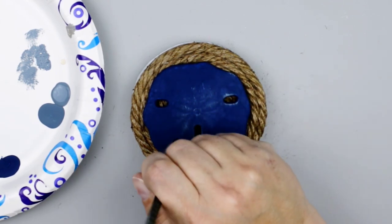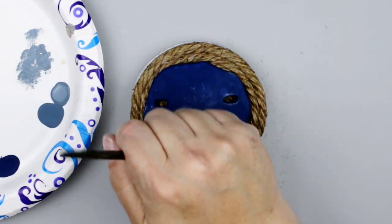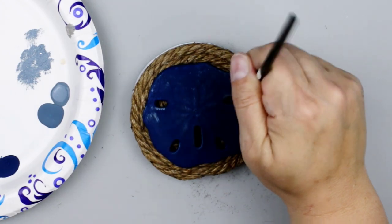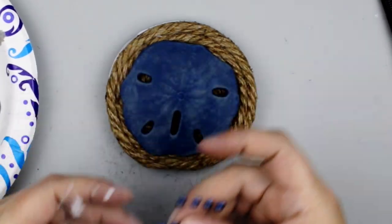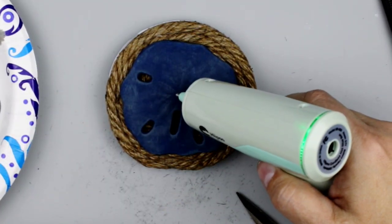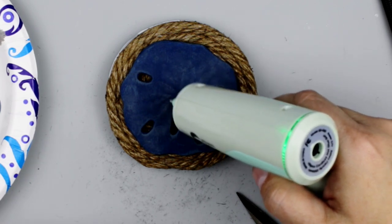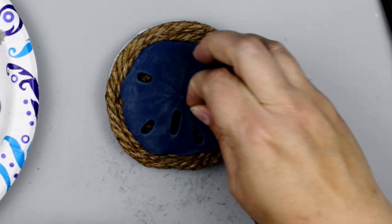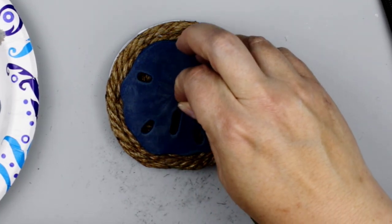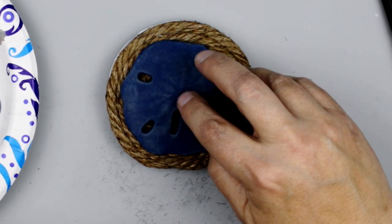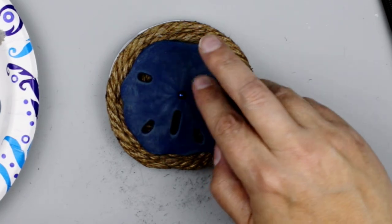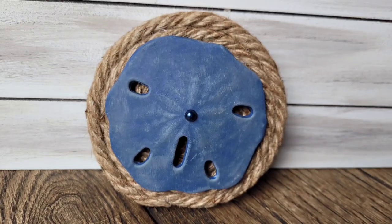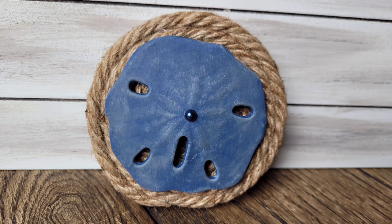I will leave all of the colors and items that I use in my description box below. So if you're interested in a certain product, you'll be able to find that down below. I am just going to finish this off by adding my sand dollar to the nautical rope and then adding a little flatback pearl in the center of that sand dollar. And that completes this project. I think this is super sweet and simple and just perfect for a tiered tray.